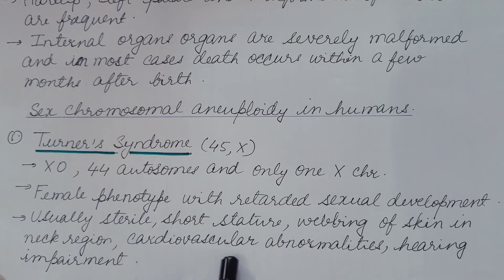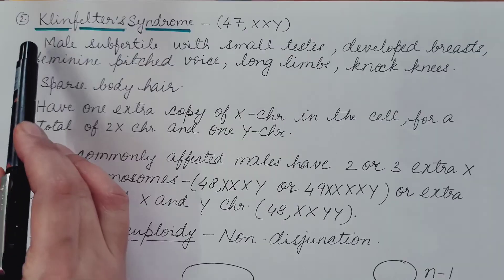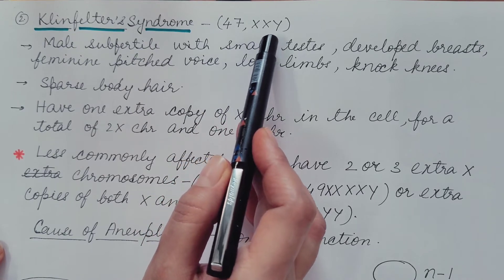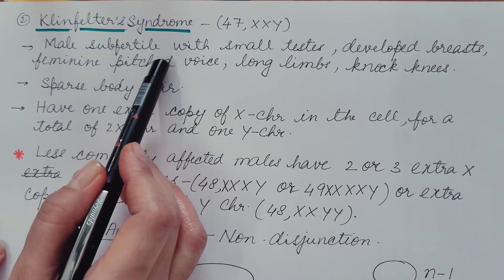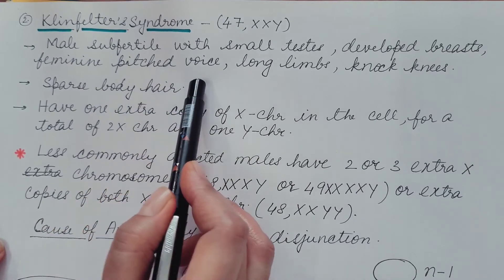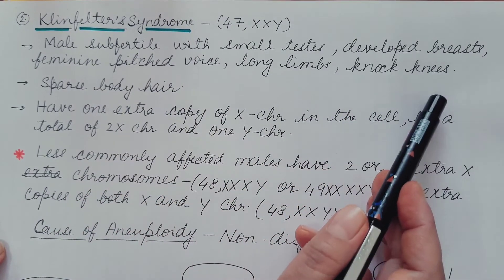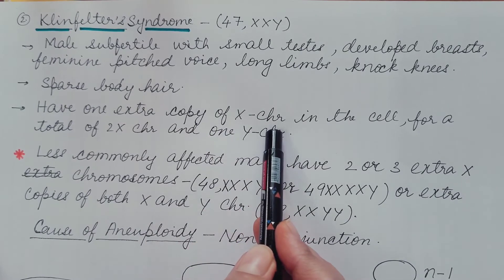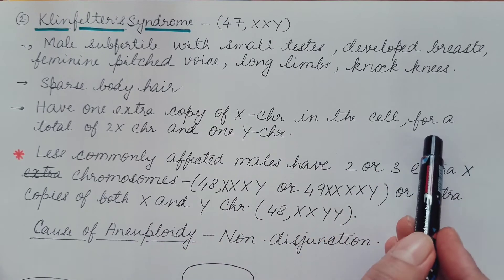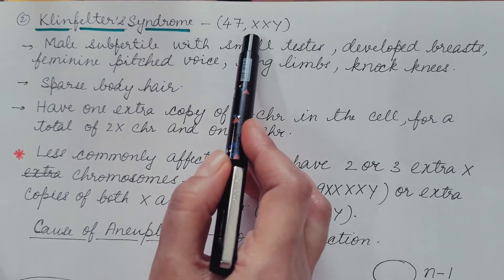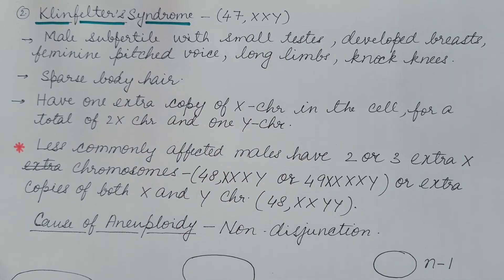Turner's syndrome individuals also show cardiovascular abnormalities and hearing impairment. Second is Klinefelter's syndrome, represented as 47,XXY. These individuals are male but sub-fertile with small testes. They have developed breasts, a feminine pitched voice, long limbs, knock knees, and sparse body hair. They have an extra copy of the X chromosome in their cells, giving a total of two X chromosomes and one Y chromosome.